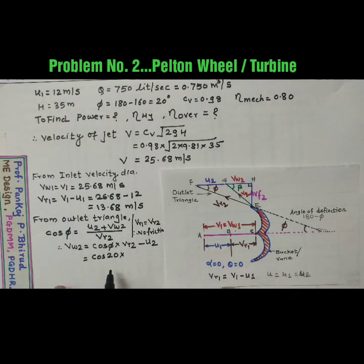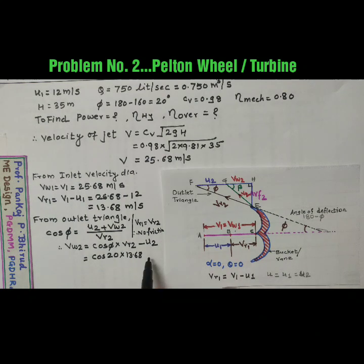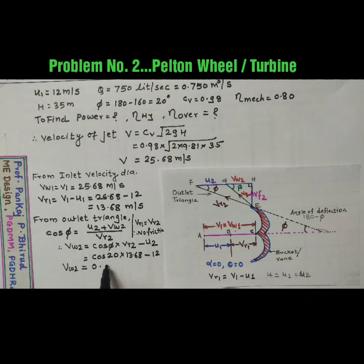So cos 20 into 13.68 minus U2 is 12. So we will get Vw2 is equal to 0.8558 meter per second.